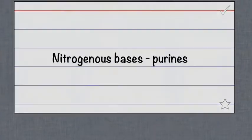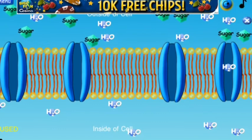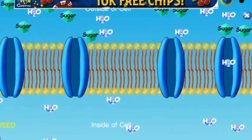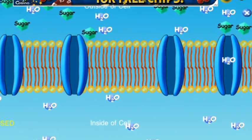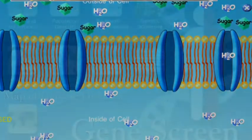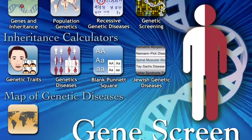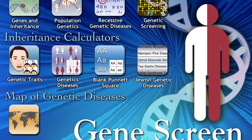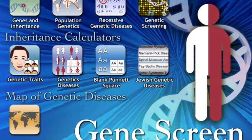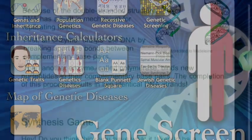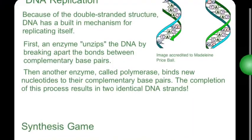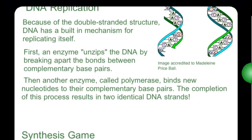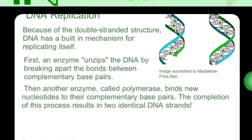Apps like Flash Card Lit and Flash Card Machine would provide opportunities for students to review information. And content-specific apps such as Cell Membrane, Gene Screen, and Evolutionary Biology would allow students to practice difficult concepts learned during class through real-life examples, animations, and games.